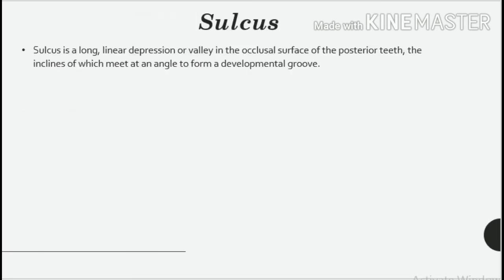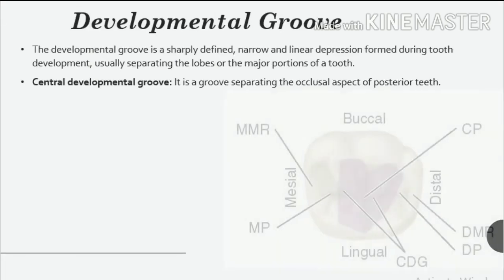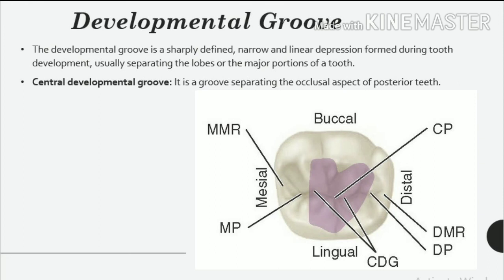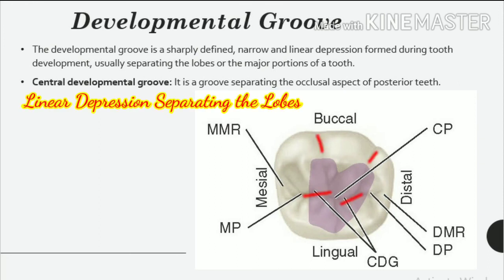Sulcus. A sulcus is a long, linear depression or valley in the occlusal surface of the posterior teeth, the inclines of which meet at an angle to form a developmental groove. Developmental groove: the developmental groove is a sharply defined, narrow and linear depression formed during tooth development, usually separating the lobes or the major portions of a tooth.